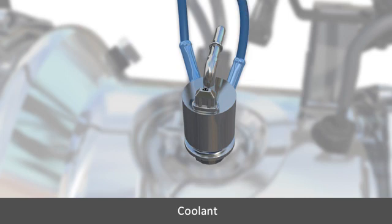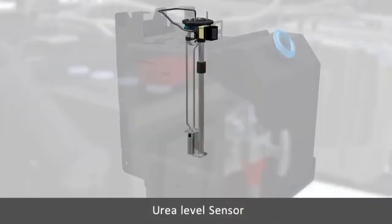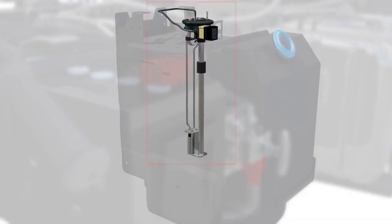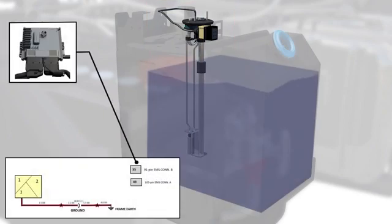Urea level sensor is located over the diesel exhaust fluid tank. The sensor is used to measure the amount of urea left in DEF tank. Its pin 1 receives the supply from pin 35 of EMS, pin 3 is ground to frame, pin 2 sends signal corresponding to urea level to the EMS. EMS indicates level on instrument cluster.